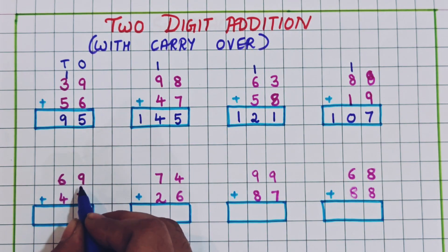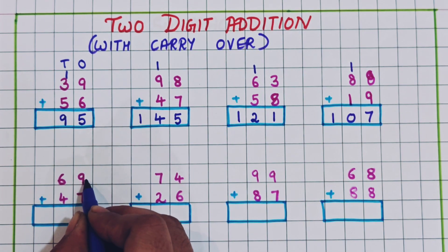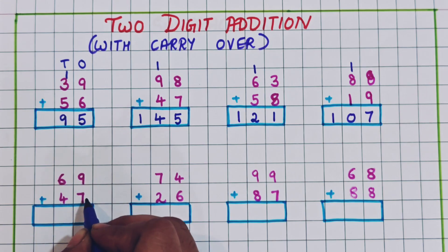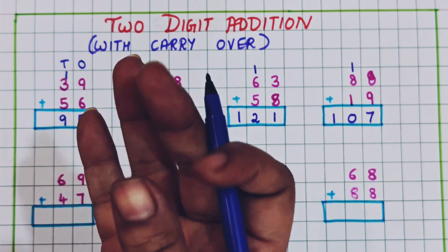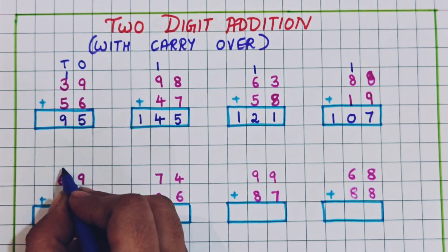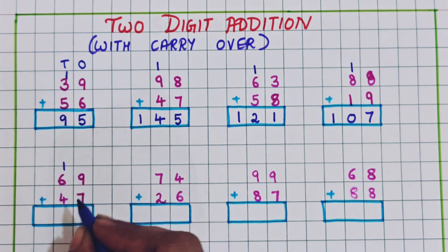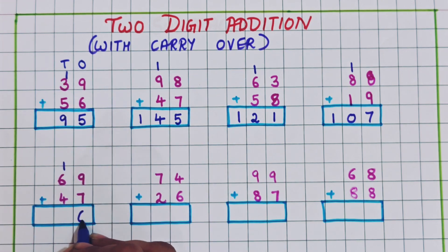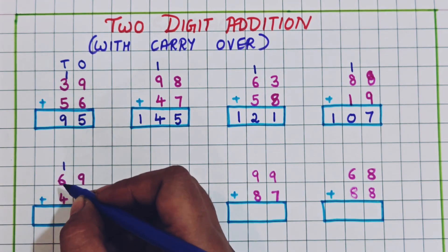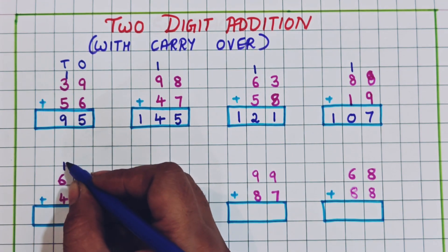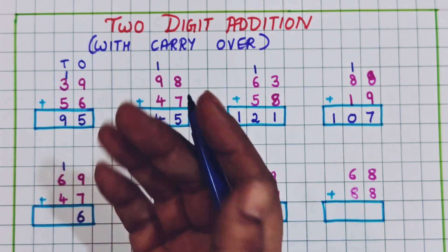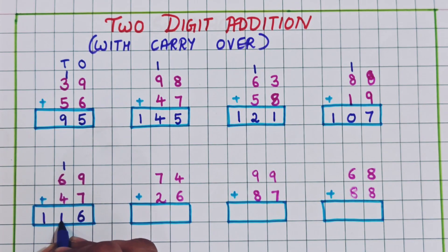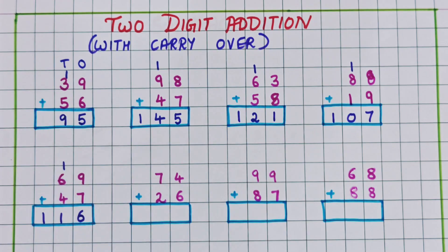Now 69 plus 47. I will keep 9 in my mind and add 7: 10, 11, 12, 13, 14, 15, 16. So I will write 1 here and 6 at the bottom. Now 6 plus 1 is 7: 8, 9, 10, 11. So here I will write 11. The answer is 116.